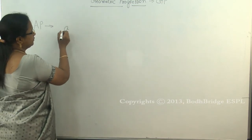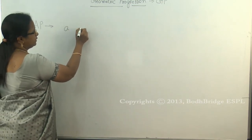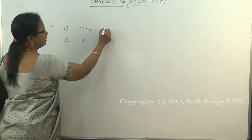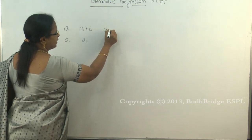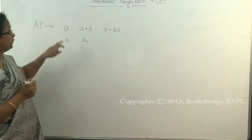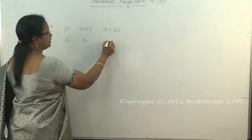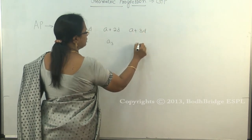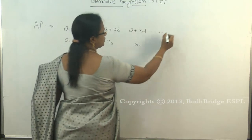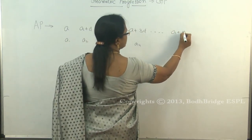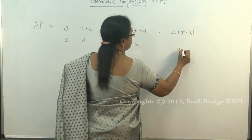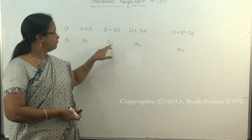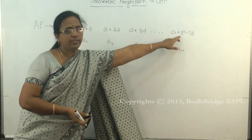To summarize, an arithmetic series can be written as: a, a + d, a + 2d, a + 3d, ..., a + (n − 1)d. The first term is a, the second is a + d, the third is a + 2d, the fourth is a + 3d. For the nth term, the coefficient of d is always one less than n, giving aₙ = a + (n − 1)d.